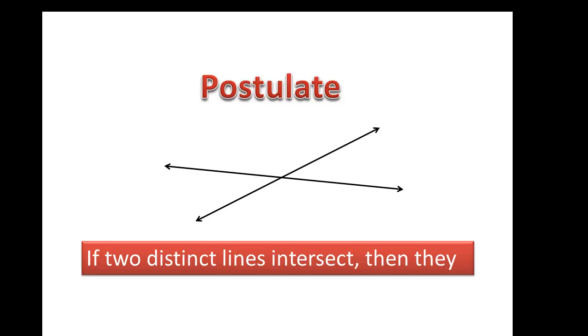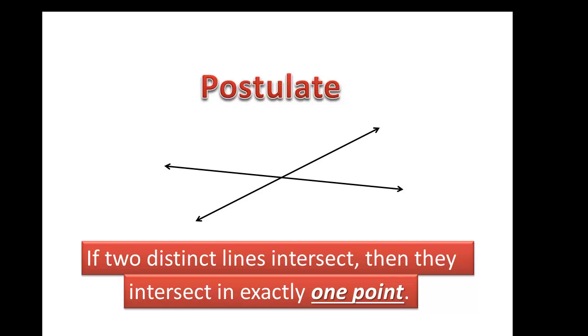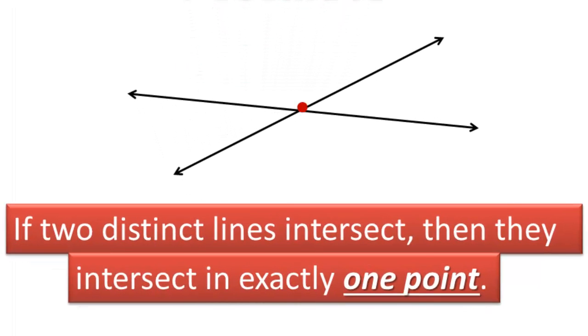The next postulate is if two distinct lines intersect then they intersect in exactly one point. Again, just makes sense.